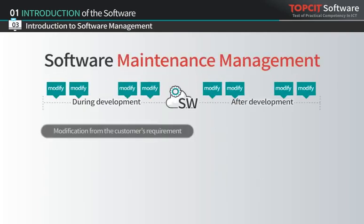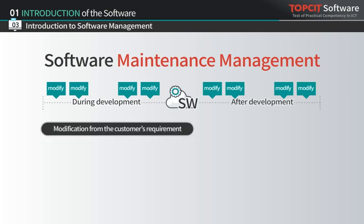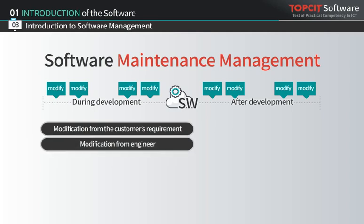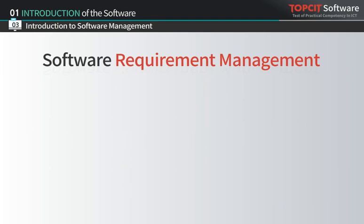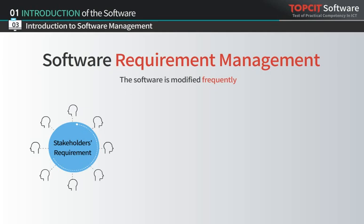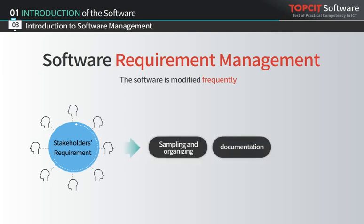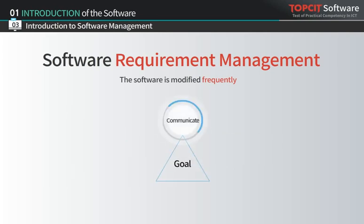Software maintenance management is the first activity. Unlike other systems, software requires many changes during or after the development stage, because user requirements consistently change and engineers need technical changes. Software should be made to easily embrace such changes. Software maintenance management is a process of adapting and preparing for changes when the customer uses the software. Software requirement management is a systematic activity that extracts requirements from project stakeholders in order to establish, document, and agree on changes.